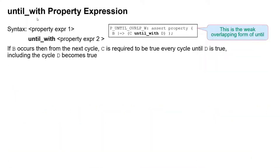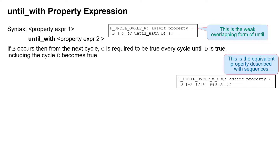Another form of until is until_with — very similar syntax. The only thing different is we've got underscore-with instead, and that is a weak overlapping form of until. If B occurs, then from the next cycle, C is required to be true until D is — but the important difference here is including the cycle where D becomes true, C is required to be true as well. That's why it's called overlapping: C and D must be true in the same cycle, otherwise it's a failure. The sequence equivalent changes the star — zero to an infinite number — to a plus, meaning one to an infinite number, and changes the separator to ##0 to indicate sequence fusion, so the final cycle of the C sequence is also the cycle where D occurs.